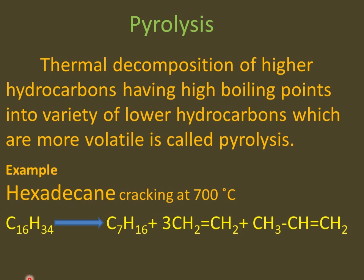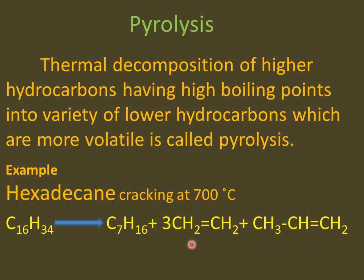For example, hexadecane, composed of 16 carbons, is cracked at 700°C into smaller hydrocarbons like n-heptane, which contains only 7 carbons. We also get side products such as ethene, a 2-carbon compound, and propene, a 3-carbon compound with a double bond. These side products can be used in paints, dyes, and other things. Here, our main product to deal with is n-heptane.